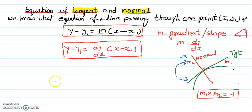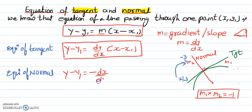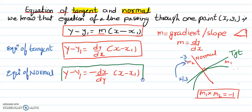So that's the relationship between tangent and normal. The equation of tangent is y minus y1 equals dy by dx times x minus x1. For the equation of normal, y minus y1 stays the same, but because the gradient is the negative reciprocal, we put negative dx over dy. So equation of normal is y minus y1 equals dx over dy times x minus x1.